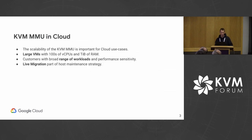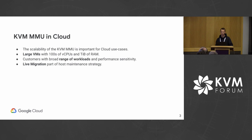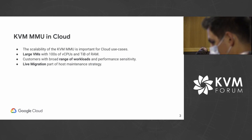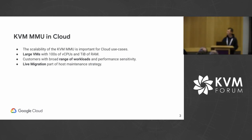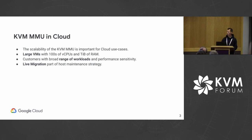The KVM MMU in cloud is a very critical piece of KVM, and the main important thing is the scalability of the KVM MMU. In cloud, we have large VMs with hundreds of vCPUs and terabytes of RAM. Within Google Cloud specifically, we've got up to 400 vCPU VMs and 12 terabytes of RAM, and a broad range of customers with many different workloads and performance sensitivities.